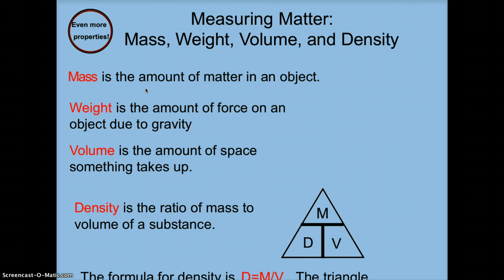So continuing along with measuring matter, besides density, we can also look at the object's mass by itself, we can look at weight, we can look at volume. So mass is the amount of matter in an object, as we've discussed before. Then there's weight, which is different than mass, sometimes it's often confused with mass, but we'll get into the differences later on. But for now, what you need to know is that weight is the amount of gravitational force on an object, or the amount of force on an object due to gravity. And then there's volume, the amount of space, another topic we've talked about, the amount of space that something takes up.